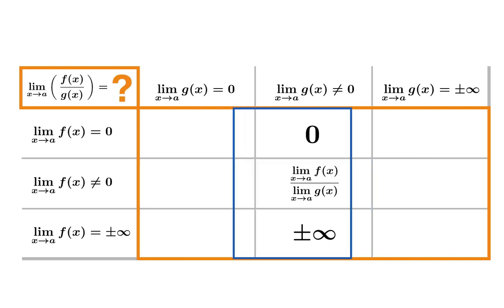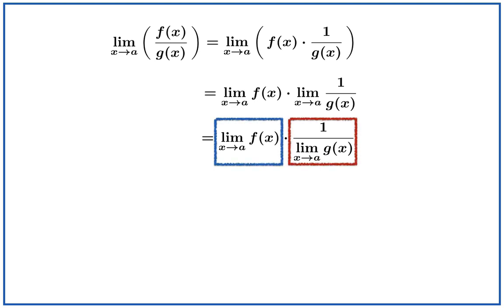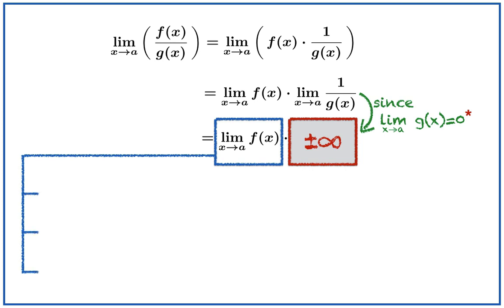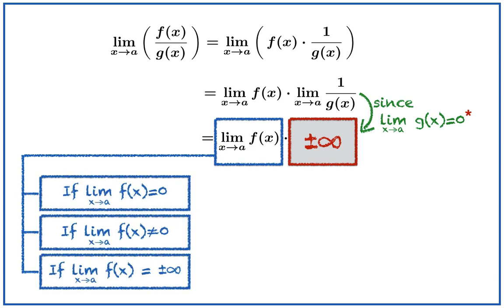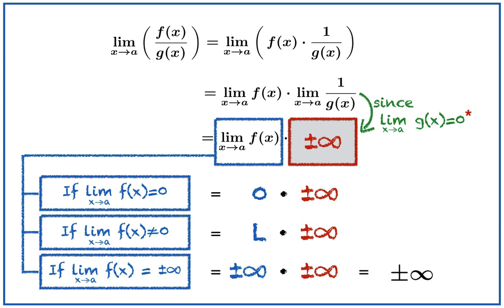Now we'll assume that the limiting value of g is zero. Once again, we use all our tools to express the limit of the quotient as the product of limits. Since the limiting value of g is zero — with the caveat that it preserves sign on the final approach — we know that the limiting value of the reciprocal will be either positive or negative infinity. We split this into three cases depending on whether the limiting value of the numerator function is zero, non-zero, or infinite. Looking at the mnemonic results, the bottom one is positive or negative infinity, as is the middle one. But the top one is trouble — this is what we have deemed to be an indeterminate case. We simply don't know what the result is if the limit of one factor is zero while the limit of the other factor is positive or negative infinity.